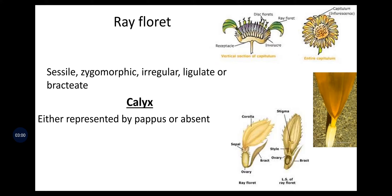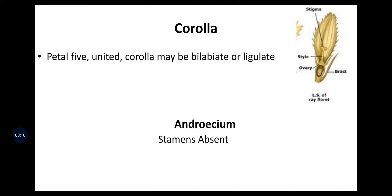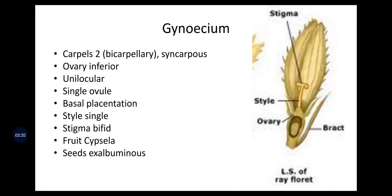Coming to the ray floret's calyx, i.e., sepal, it is entirely represented by pappus or absent. Corolla is five-petaled and united. Corolla may be bilabiate or ligulate. Androecium, i.e., male reproductive parts, stamen absent. Gynoecium: carpels two, bicarpellary syncarpous, ovary inferior, unilocular, single ovule, basal placentation, style single, stigma bifid. Fruit is cypsela and seed is exalbuminous.